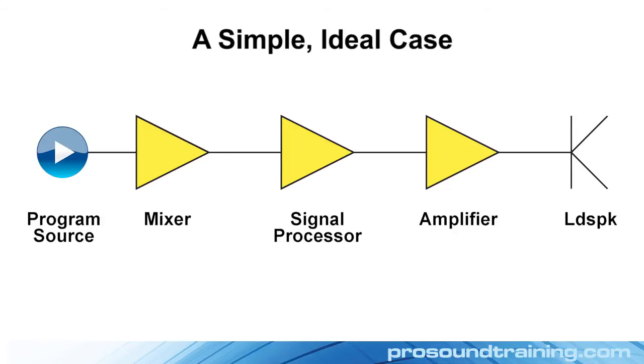So I hit play on the program source and it puts out 1 volt, which causes the mixer to put out 1 volt. The signal processor is operating in its default setting of Unity, so it puts out 1 volt. The power amp produces 1 volt into the loudspeaker, and that just happens to be the perfect loudness for the listener out in the audience. This ideal system would not need its gain structure set. It's already got an ideal gain structure.